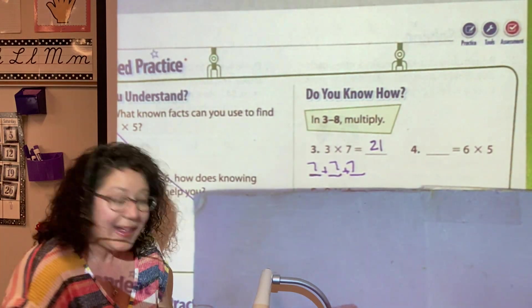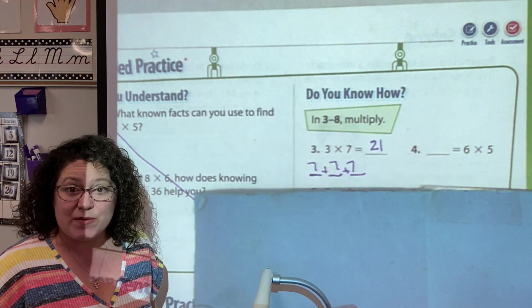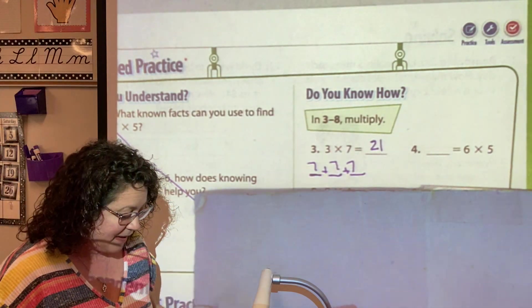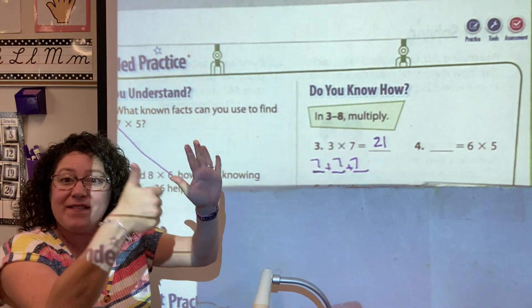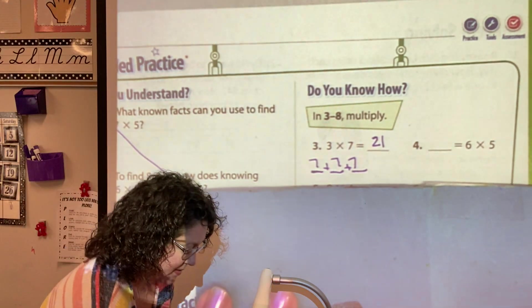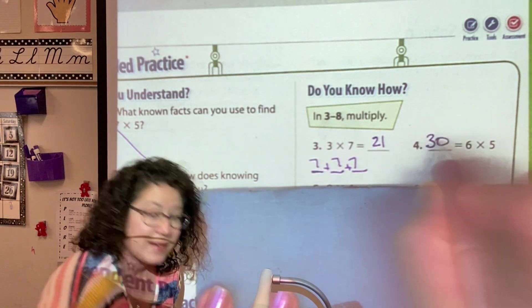Six times five. Well, I know anything times five ends in a zero or a five and then I can skip count by five. Six times five: five, ten, fifteen, twenty, twenty-five, thirty. Six times five is thirty.